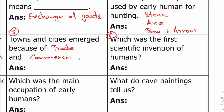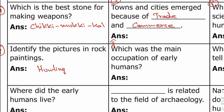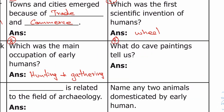Sixth question: which was the first scientific invention of humans — wheel. Seventh question: identify the pictures in rock painting — hunting. Eighth question: which was the main occupation of early humans — hunting and gathering. Ninth question: what do cave paintings tell us — the lifestyle of the people. The paintings help us find out about the time when humans had that lifestyle.